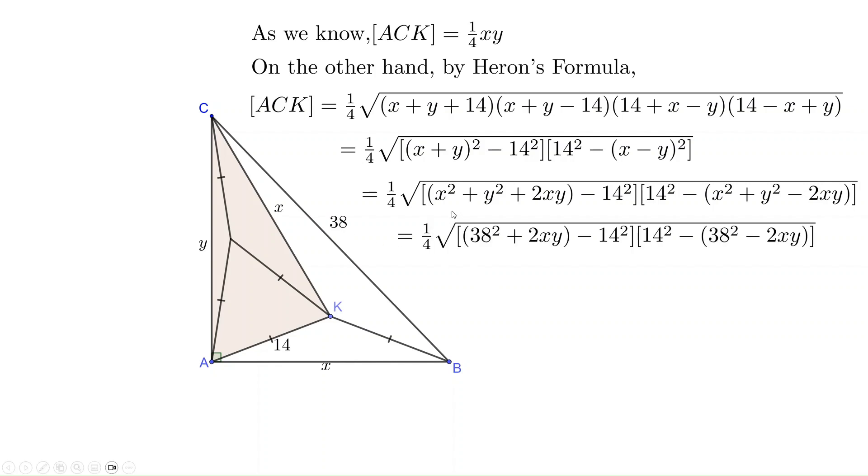After x² + y² is replaced by 38², here and here, and rearrange the terms, we have 1/4 times square root of (2xy + 38² - 14²) times (2xy - 38² + 14²). It is equal to 1/4 of root [(2xy)² - (38² - 14²)²].